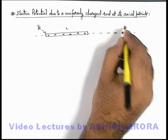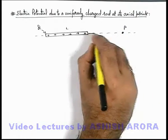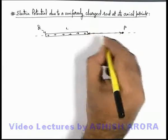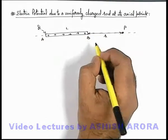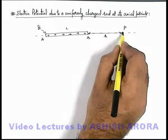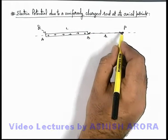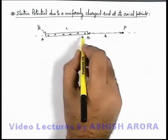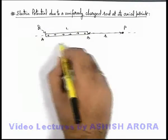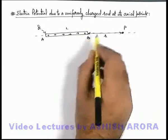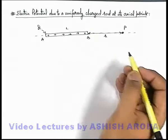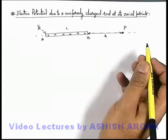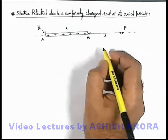From end b, at a distance r on the axis there is a point p. We wish to find out the potential at p due to the electric field produced by the charges on the rod in its surrounding. Then we follow the same situation which we have studied in the previous section.